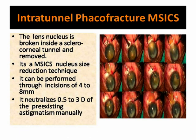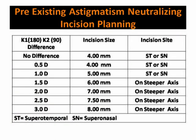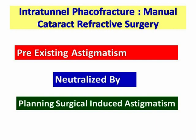Intratunnel FACO fracture is a nucleus management technique of manual small incision cataract surgery, in which the lens nucleus is broken inside a sclerocorneal tunnel and removed. It can be performed through an incision of 4 mm to 8 mm. Up to 3 diopters of pre-existing astigmatism can be effectively neutralized by planning the incision size and site, eliminating the need for expensive toric IOLs. In other words, neutralizing pre-existing astigmatism by MSICS-induced astigmatism is also a cataract refractive procedure.